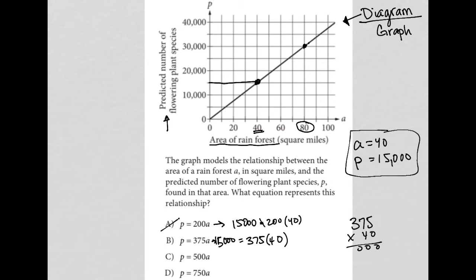We add up everything here and we get 15,000, so B works. How about C? Is it true that 15,000 equals 500 times 40? No, not at all.